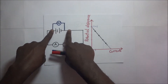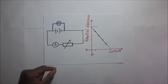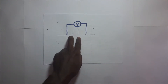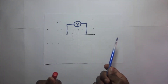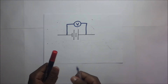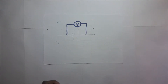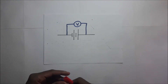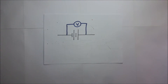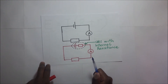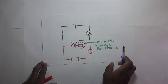When current is being drawn out of the cell, that cell is in a closed circuit. Since electricity is the flow of charge, and coulombs move from lower to higher potential, work is being done as charge flows through the cell. Therefore, EMF can also be defined as the work done in moving a charge of one coulomb throughout the battery. Speaking of this coulomb of charge going through the cell, we have what we call internal resistance.